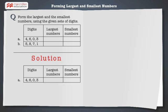Here we have the digits 4, 6, 0 and 3. To form the largest number, first arrange the given digits in descending order, that is 6, 4, 3 and 0. Hence the largest number that can be formed using the digits 4, 6, 0 and 3 is 6430.